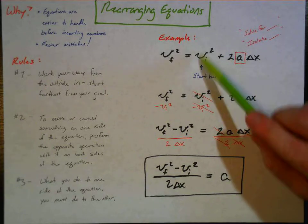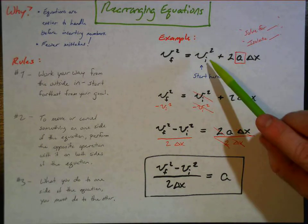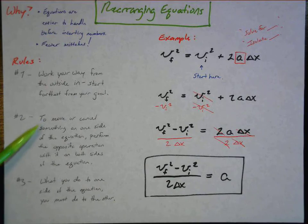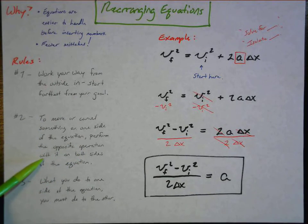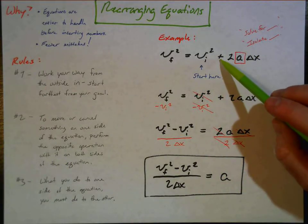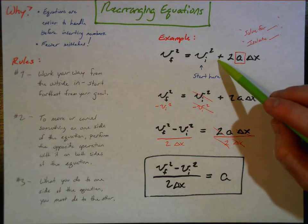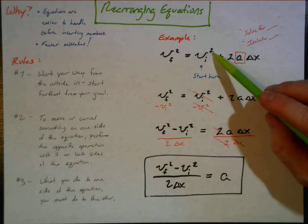Remember that this is getting added to the thing we want so you have to undo that. Well, to move or cancel something on one side, perform the opposite operation with it on both sides of the equation. So to undo this we're going to do the opposite operation on both sides. We're going to subtract this from both sides.